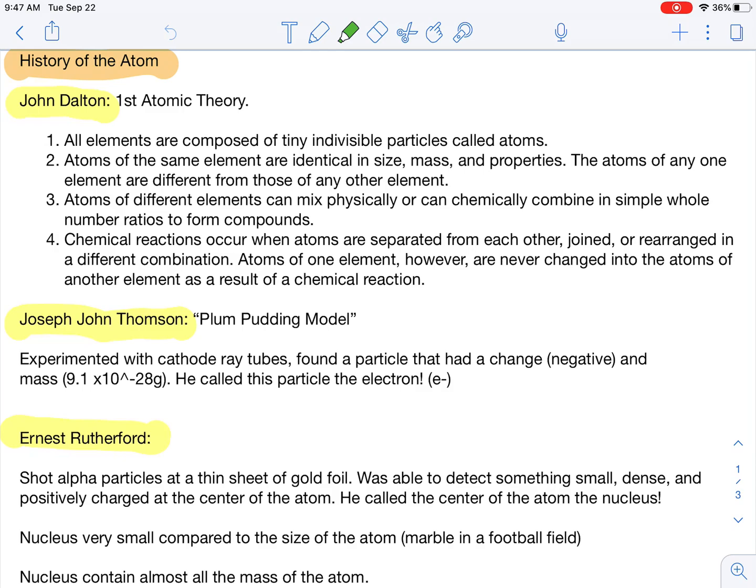All these scientists come up with changes that modify the atom over time. I think it's important that you guys see those changes and understand how the atom has evolved. You don't have to memorize all the specifics for each individual scientist. What I'd like you to know is the scientist's name, what their atom looked like, and how they changed the atom to our current understanding of the atom.